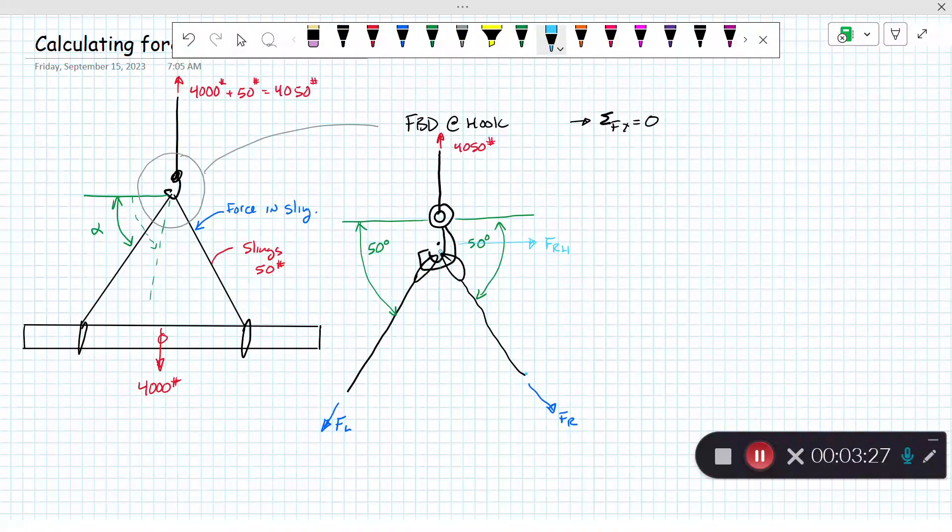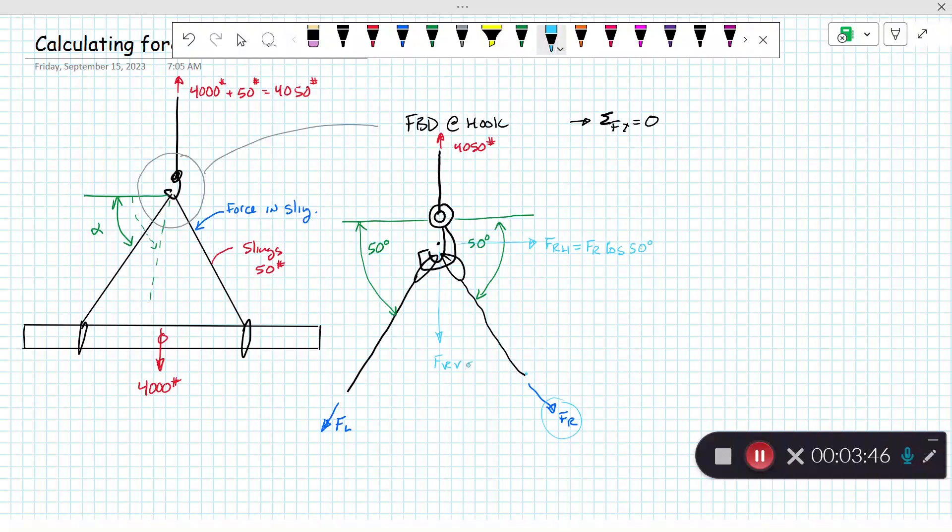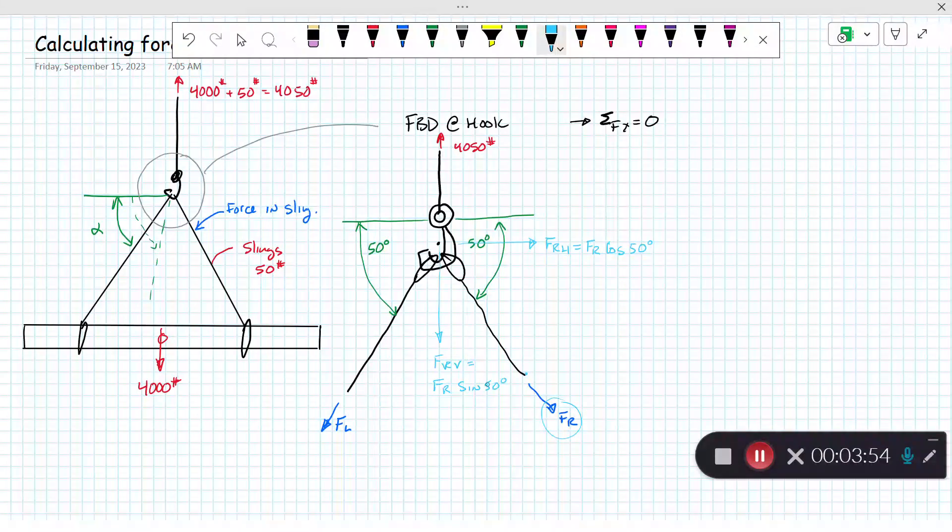This FR would be a horizontal component FRH and FR in the vertical FRV. When we add the two of those together tip to tail, we'll get FR. So FRH will equal FR times the cosine of 50 degrees, and FRV is FR sine of 50 degrees.